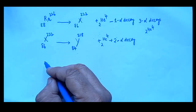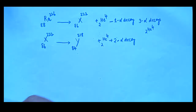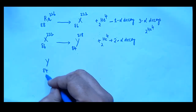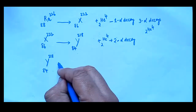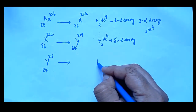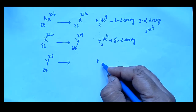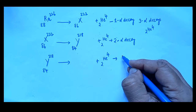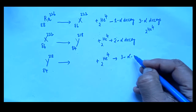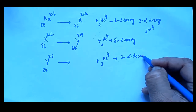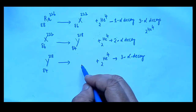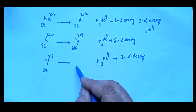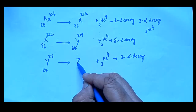Now writing the third alpha decay process. Daughter element Y with atomic number 84 and mass number 218 also emits an alpha particle, so 2He4 is written. This is the third alpha decay process. The first daughter element was named X, the second Y, and the final daughter element can be named Z.